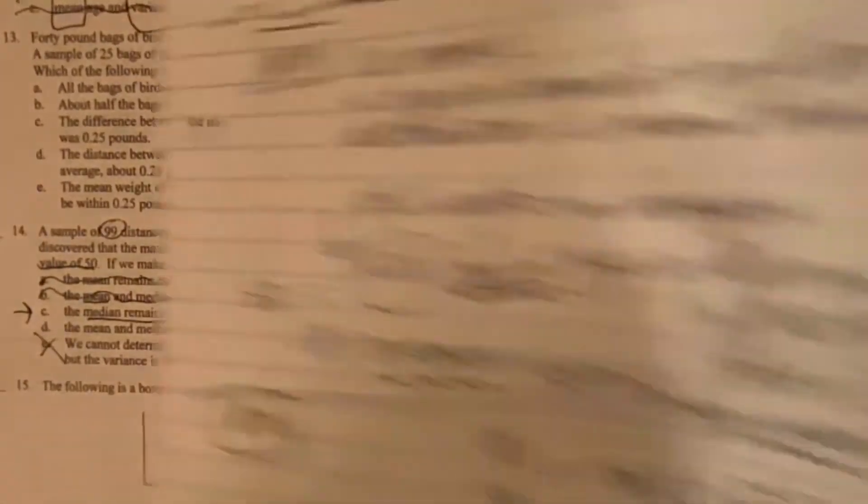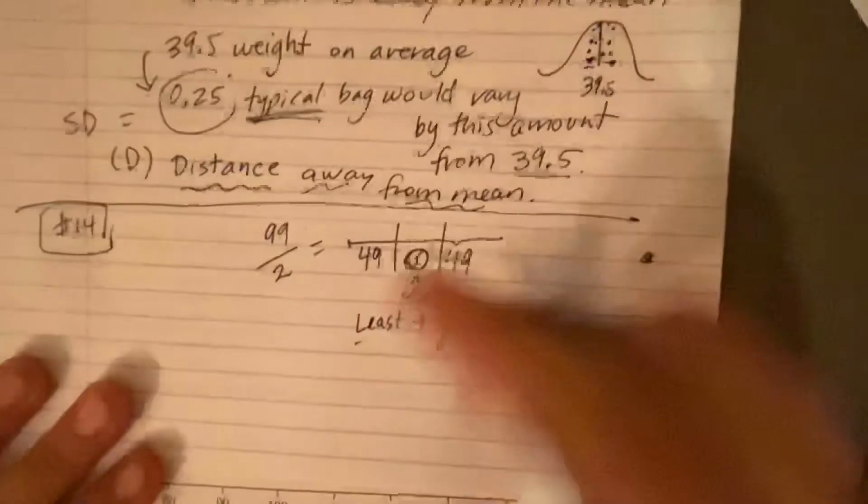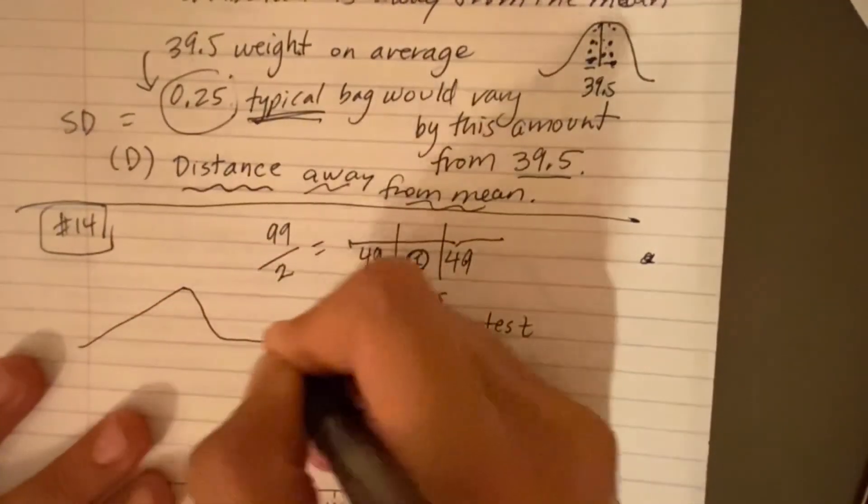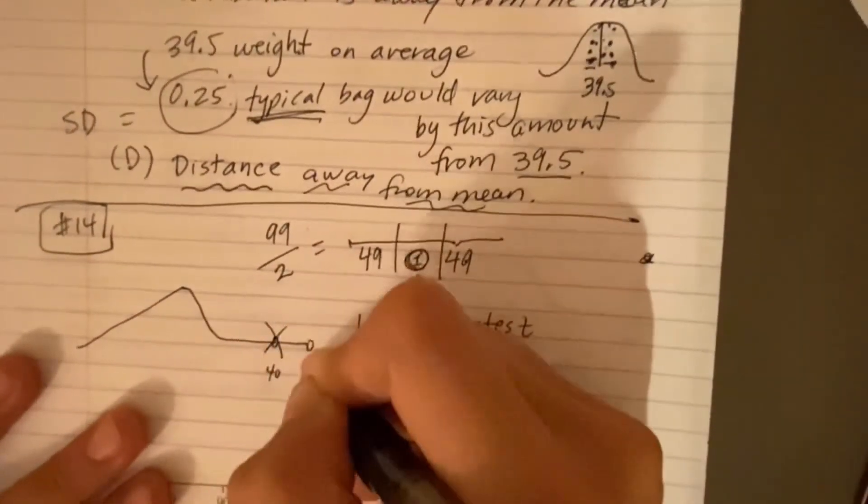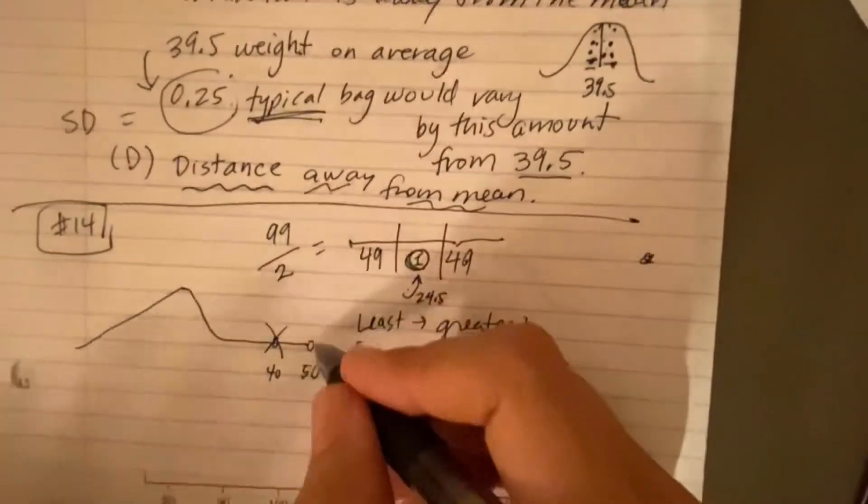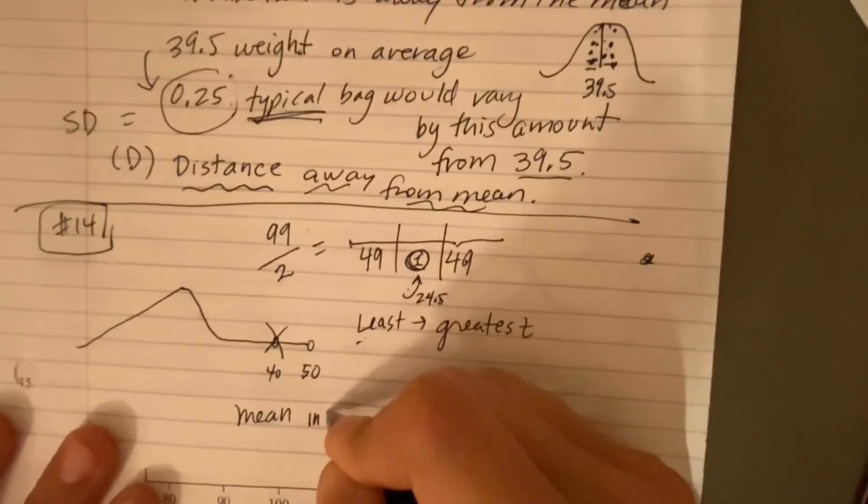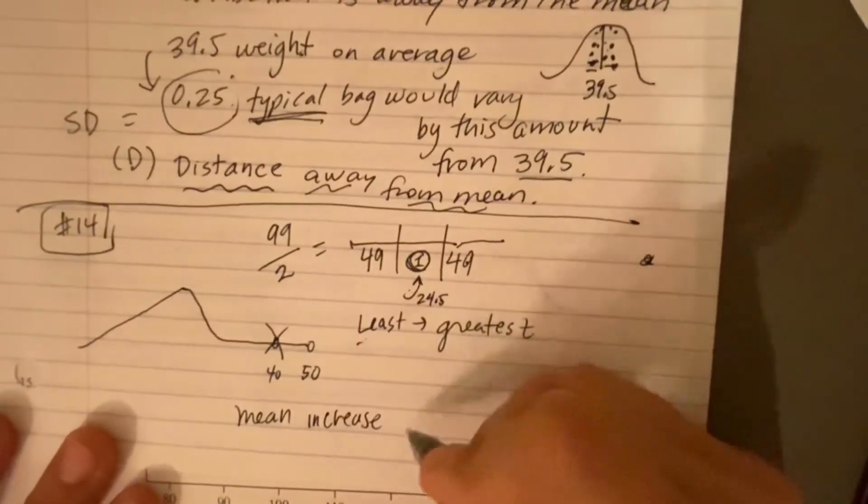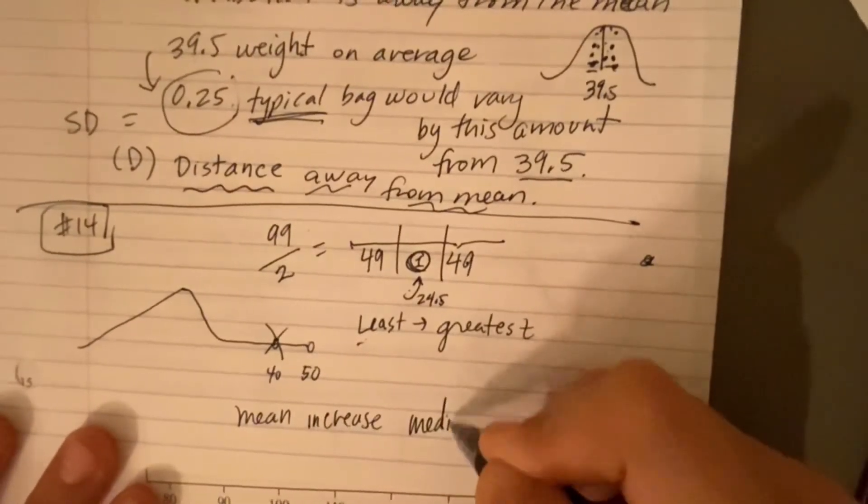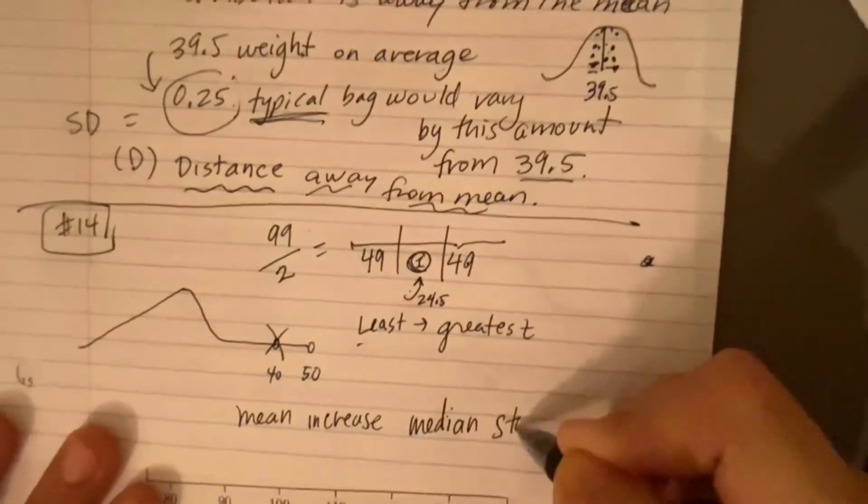The median remains the same, but the mean would increase. So there's our answer C. And again, what do you maybe put on your paper? You could again jot down this picture that if I cross out 40 and I add an even bigger number, 50, the mean will increase, but the median stays the same in this scenario.